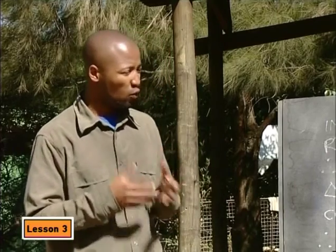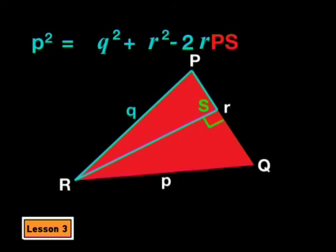Are we closer to proving what we want to prove here? Yes, because PS is the only part of this equation that still needs to change. And we still need to get cos P and Q. Now, watch carefully. Look at triangle PRS and use your trig ratios for cos.